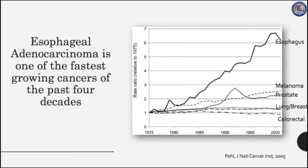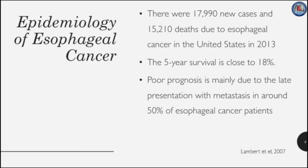Looking at the rate ratios of several cancers from 1975 to 2000, esophageal cancer, and in particular esophageal adenocarcinoma, is one of the fastest growing tumors in the last four decades. There were 17,990 new cases of esophageal cancer in the United States in 2013, with 15,200 deaths in the same year.